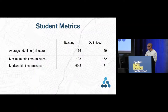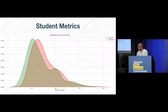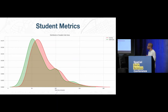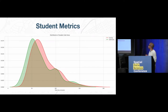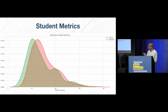Looking at student metrics, this graph restates the same thing in a slightly more visual way. You see the red graph representing the existing routes' ride times for students, and the green graph shifted noticeably to the left — indicating reduced ride times under the optimized routes.